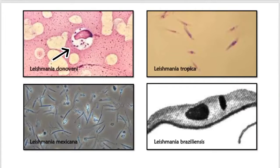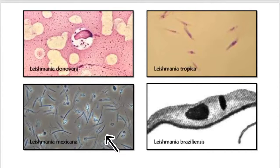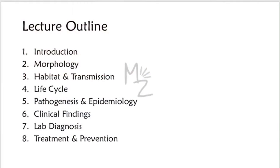In the first picture you can see Leishmania donovani as an amastigote in the macrophage of a human. The second picture shows Leishmania tropica, the third shows Leishmania mexicana, and the fourth shows Leishmania braziliensis. The lecture will cover morphology of Leishmania tropica, braziliensis, and mexicana, along with their habitat, transmission, life cycle, pathogenesis, epidemiology, clinical findings, lab diagnosis, treatment, and prevention.